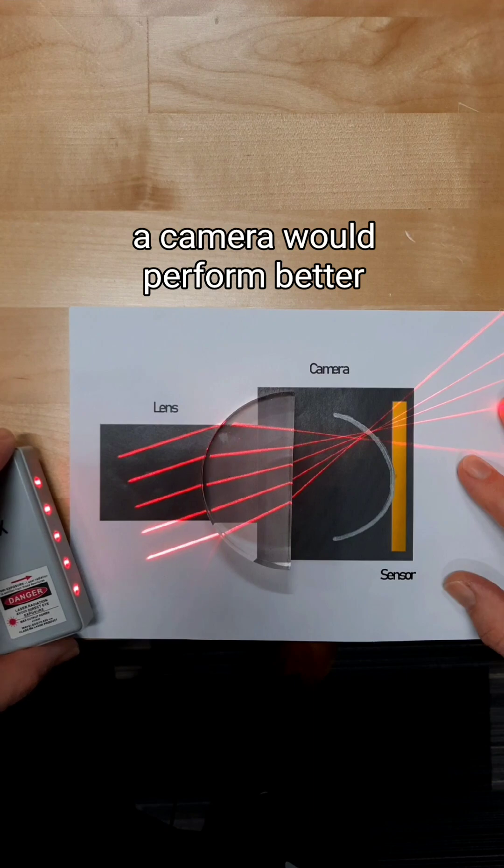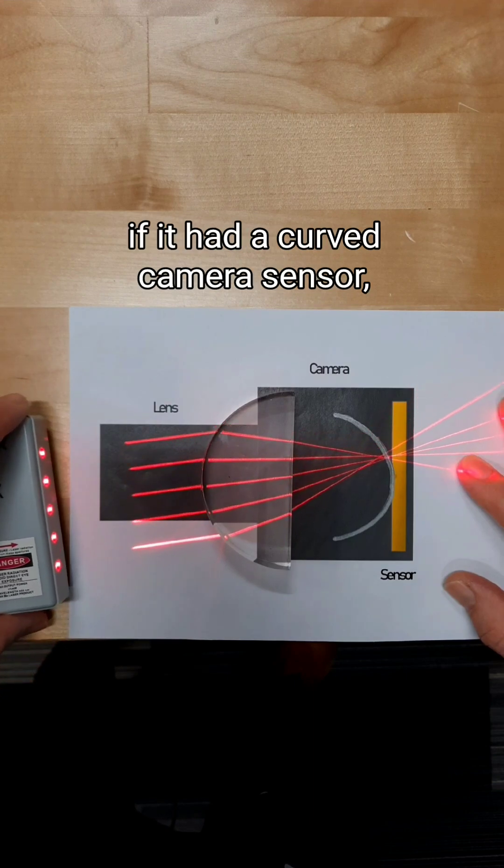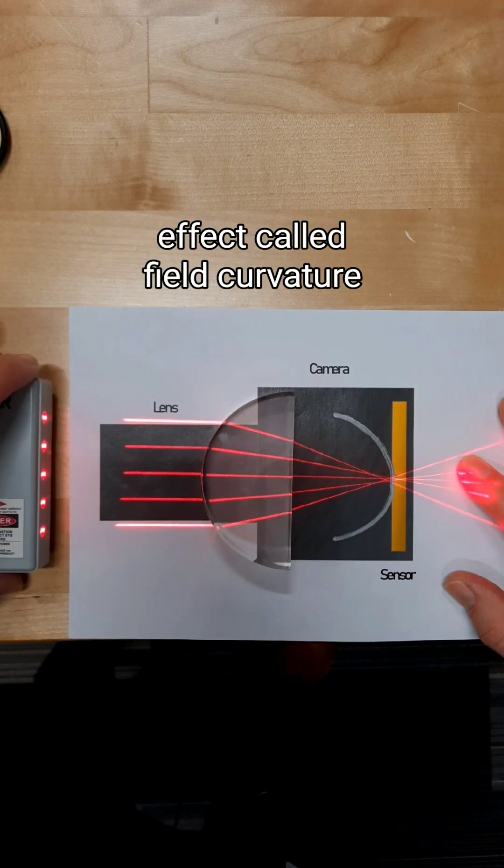So because of that, a camera would perform better if it had a curved camera sensor, which corrects for this effect called field curvature.